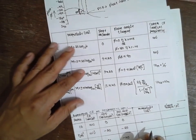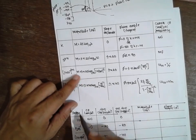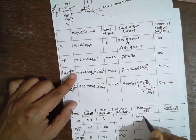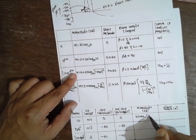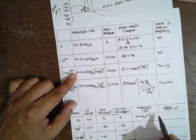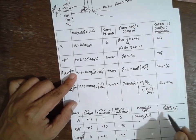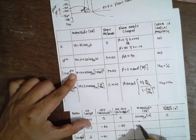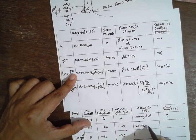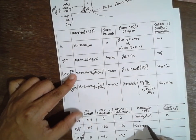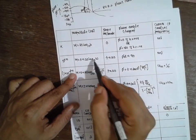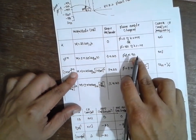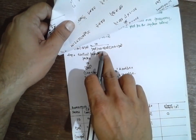For magnitude: the constant contributes 20 log₁₀(10), with phase angle 0. For jω raised to minus 1, the magnitude contribution is minus 20 log₁₀(ω), and the phase angle is minus 90 degrees because it lies in the denominator.